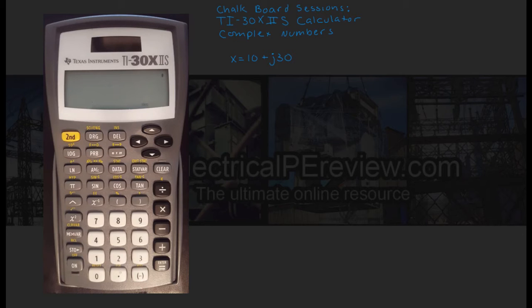So we're going to start with a rectangular vector of x equals 10 plus j3, and we're going to convert that to the polar form.